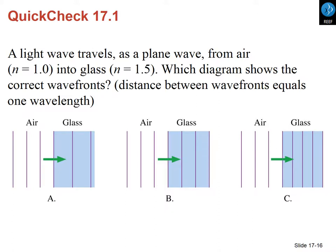A related case: a light wave travels as a plane wave from air into glass, which has an index of refraction of 1.5. Which diagram shows the correct wave fronts? Going from n = 1 to n = 1.5, the wavelength will get smaller because wavelength is inversely proportional to n. In the diagrams, the lines represent wave fronts. The correct answer shows a wave of a given size in air going into a wave with a smaller wavelength in glass.